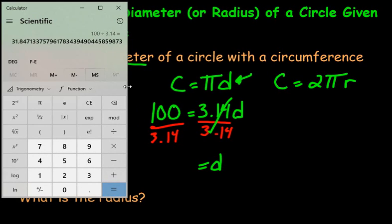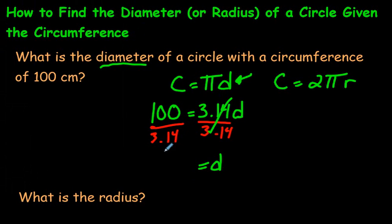We're going to have to round this off because look at the answer here. 31.847 and so on. Let's round it off to one decimal. So it'd be 31.8. So we're just rounding it off to 31.8. And that is centimeters.